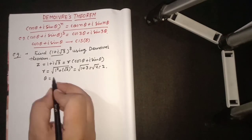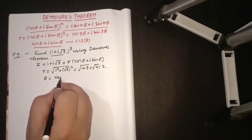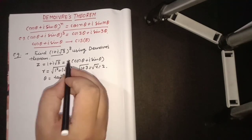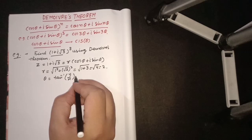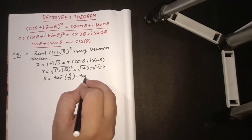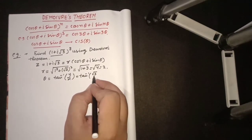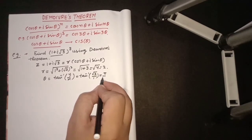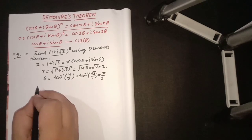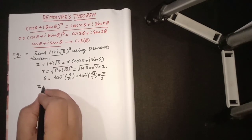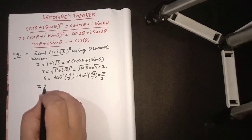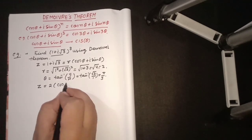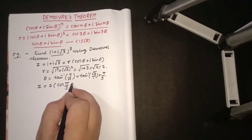Similarly, θ will be calculated by the formula tan inverse y upon x, where x + iy is a complex number. So the imaginary part and real part will be √3 and 1, and the value will come out π/3. So our complex number will shape in the form z = 2(cos π/3 + i sin π/3).